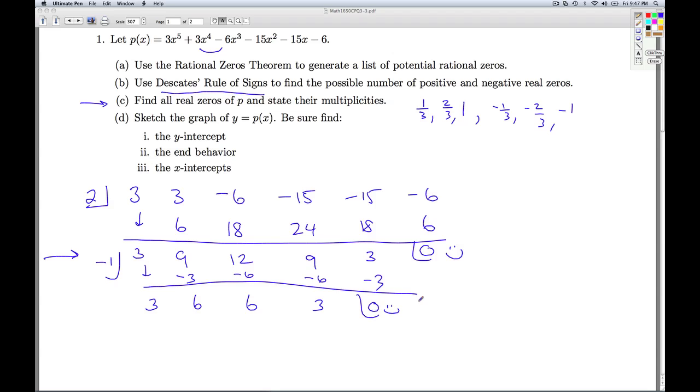Now, Descartes' rule of signs said there could be 0, 2, or 4 negative real zeros, which doesn't discount the fact that this could go in more than once. So we go ahead and try, see if it goes in again. Bring down the positive 3. We multiply and add, multiply and add, multiply and add. And now we're really happy because we started off with a fifth degree polynomial, and we've worked our way down to a quadratic polynomial. This knocked it down to a fourth degree, third degree, and now we're down to a second degree.